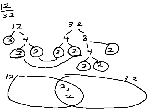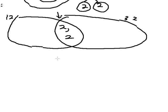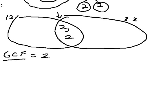2 times 2. The greatest common factor is the product of these two. The greatest common factor equals the product of the intersections, the product of the numbers in the intersection.